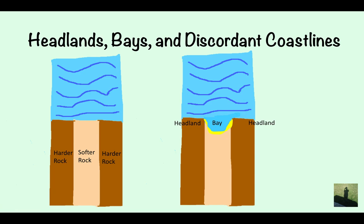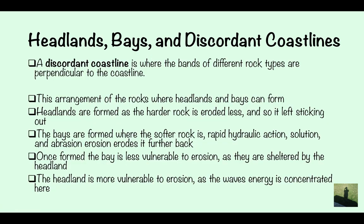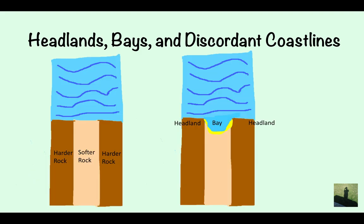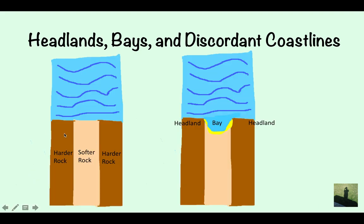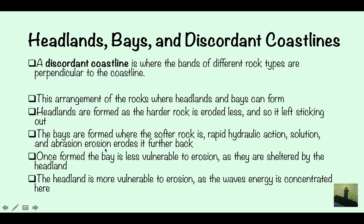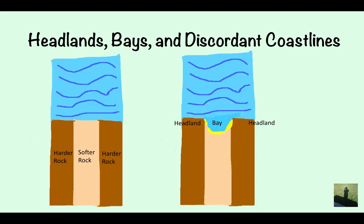Headlands, bays and discordant coastlines. A discordant coastline is where bands of different types of rock are perpendicular to the coast — running into it rather than parallel alongside it. This arrangement of rock is where headlands and bays come from. Headlands are formed as the harder rock is eroded less, while bays are formed when the softer rock is eroded through rapid hydraulic action, solution, and abrasion, eroding it further back than the harder rock.